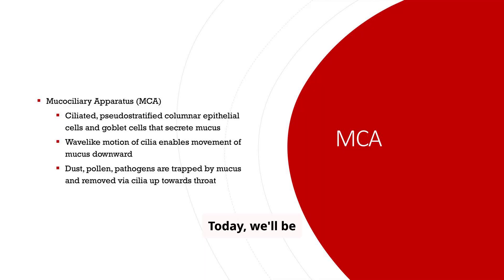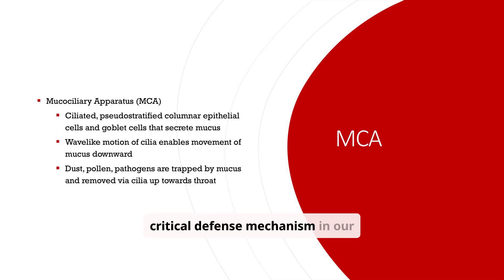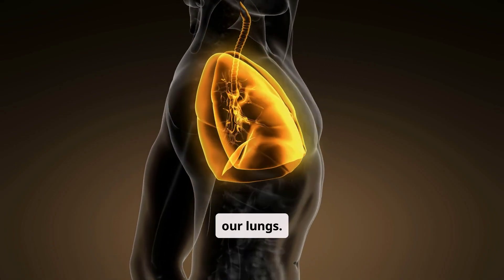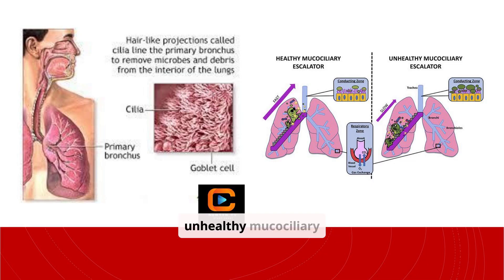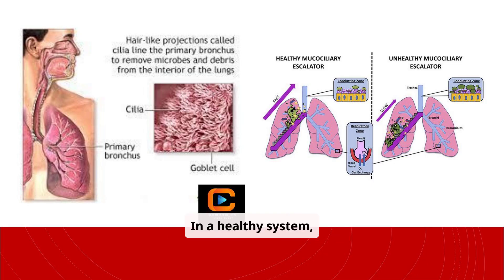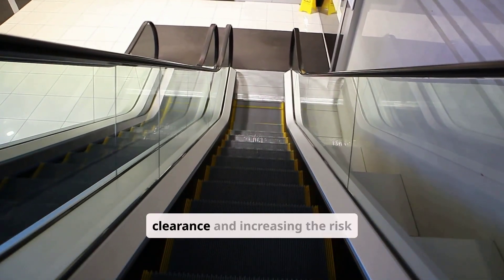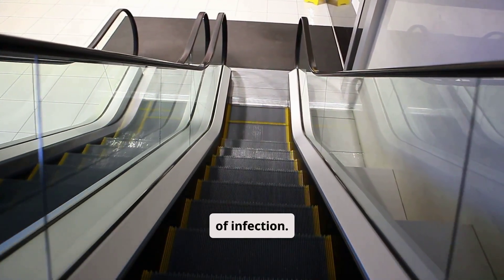Today we'll be discussing the mucociliary apparatus, or MCA. This is a critical defense mechanism in our respiratory system. We'll explore its structure and how it functions to protect our lungs. In a healthy system, cilia efficiently remove microbes and debris. But when unhealthy, the escalator slows down, impairing clearance and increasing the risk of infection.